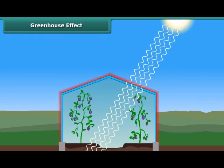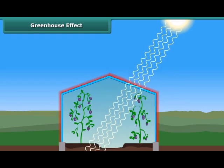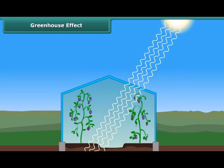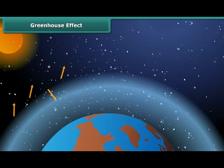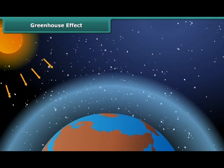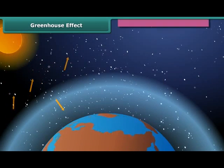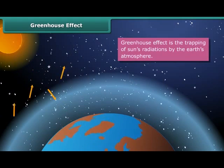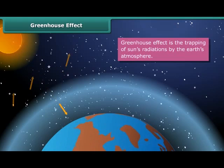Similarly, greenhouse gases like carbon dioxide, methane, and nitrous oxide in the atmosphere act like glass panes. When the sun's radiation reaches our atmosphere, some rays are reflected back into space and some are trapped by greenhouse gases, causing the atmosphere of the Earth to warm up.